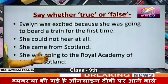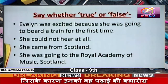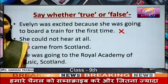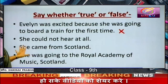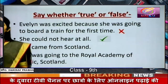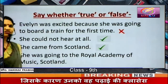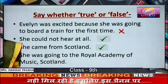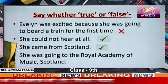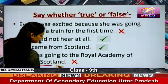Comprehension exercise — true or false. First: Evelyn was excited because she was going to board a train for the first time. This is false, because she was excited as it was her first day going to the Royal Academy of Music in London. Second: She could not hear at all — true, she was profoundly deaf. Third: She came from Scotland — true, from a Scottish farm. Fourth: She was going to the Royal Academy of Music Scotland — false, it was situated in London, not Scotland.